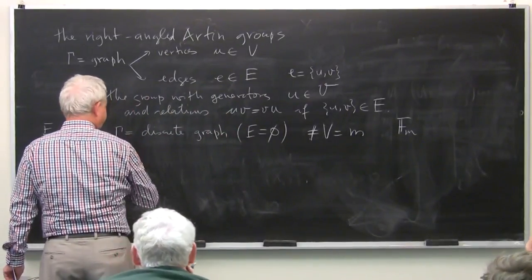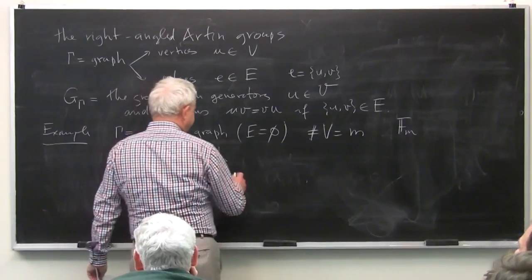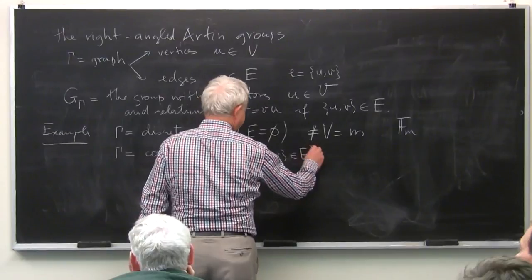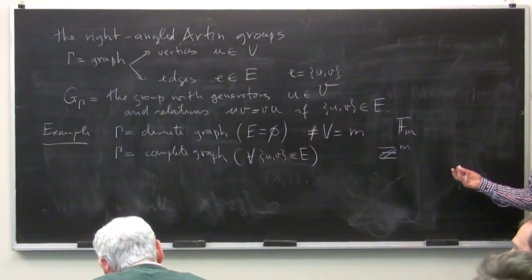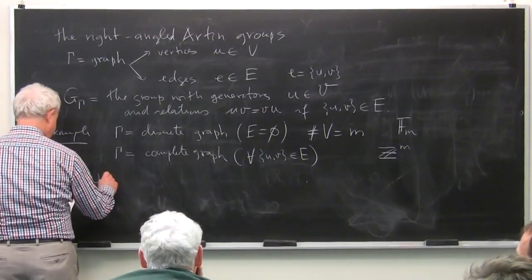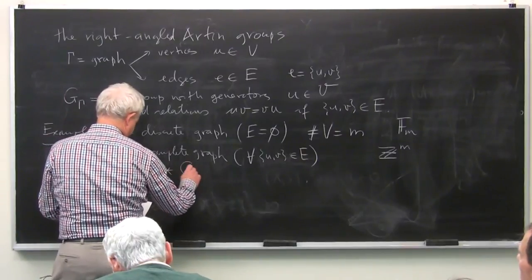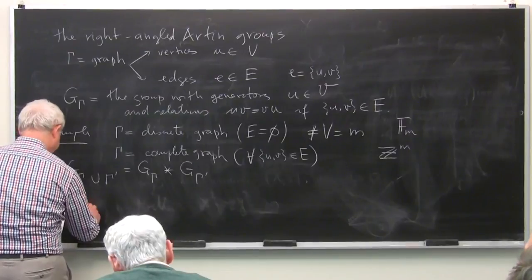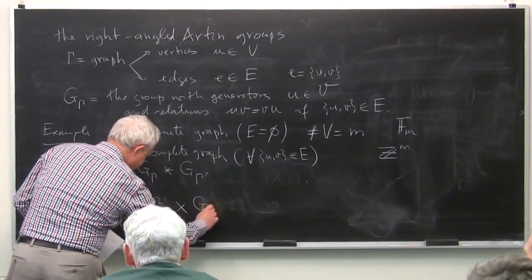At the other extreme, if gamma is a complete graph — meaning all pairs (u,v) are edges — then we get a group with m generators that is abelian, because everything commutes. Moreover, if I have a disjoint union of two graphs, I get the free product in the category of groups. And if I have the join, I get the direct product.